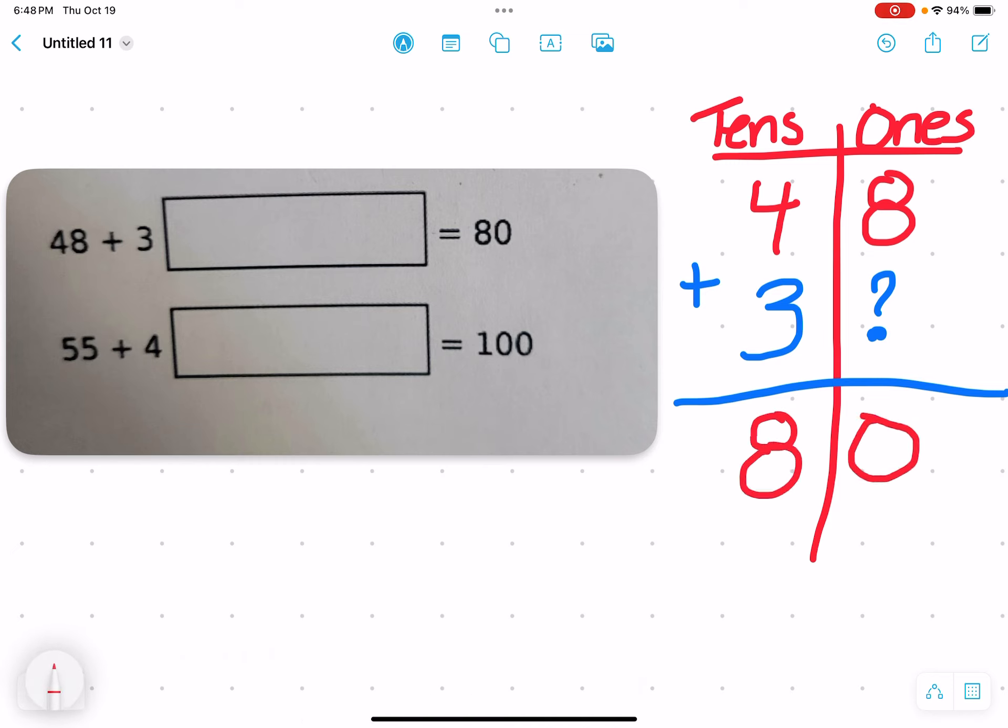So the real question would be, what would you have to add to 8 to get 0? Notice how you have to add. If I add 1 to 8, I'm going to get 9. But if I add 2 to 8, I'm going to get 10. 10 will have a 0 at the end.